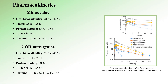Now let's look at the pharmacokinetics profiles of mitragynine and 7-hydroxymitragynine. Mitragynine's oral bioavailability ranges from 21 to 44%. It takes between 0.8 to 1.5 hours to reach its peak plasma concentration, and the biological half-life varies between 3 to 9 hours. Mitragynine has a high protein binding profile at around 85 to 95%, meaning a significant portion remains bound to blood plasma proteins, limiting its access to the central nervous system and affecting its metabolism. The terminal half-life ranges from 23 to 45 hours.